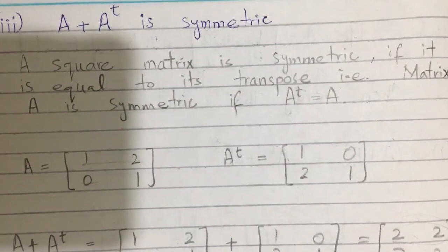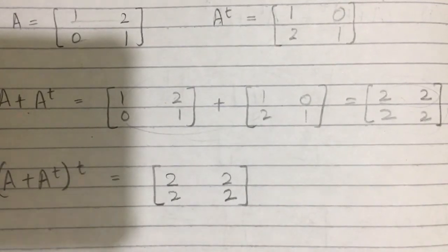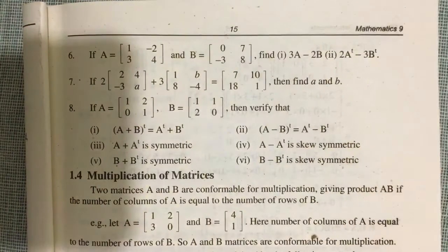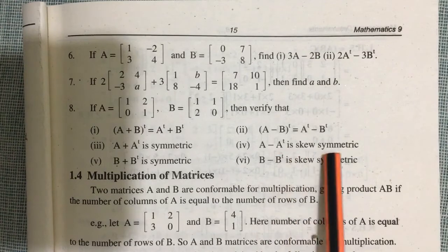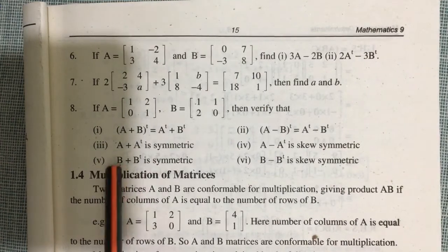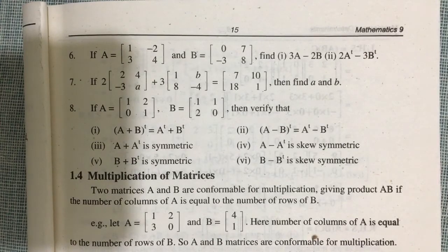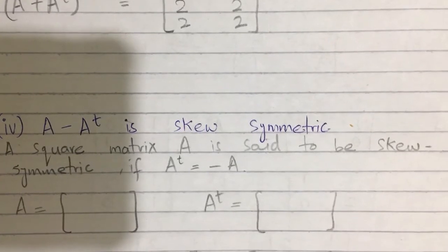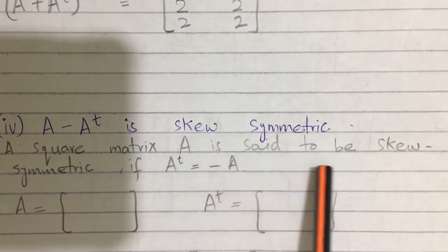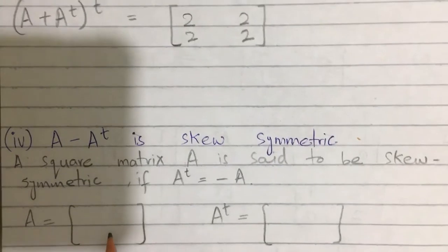Hence it is proved that A + A^T is symmetric, as its transpose equals the same matrix. The fourth part is also similar: A minus A^T is skew-symmetric. A square matrix A is said to be skew-symmetric if A^T is equal to minus A. If the transpose equals minus A, then the matrix is skew-symmetric.